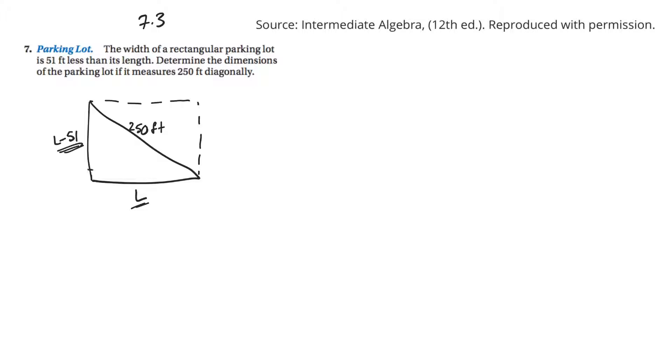So I know three sides of a right triangle, so I can use Pythagoras. C squared equals A squared plus B squared. So 250 squared. Let's call this one A and this one B. So A is L minus 51 squared plus L squared.